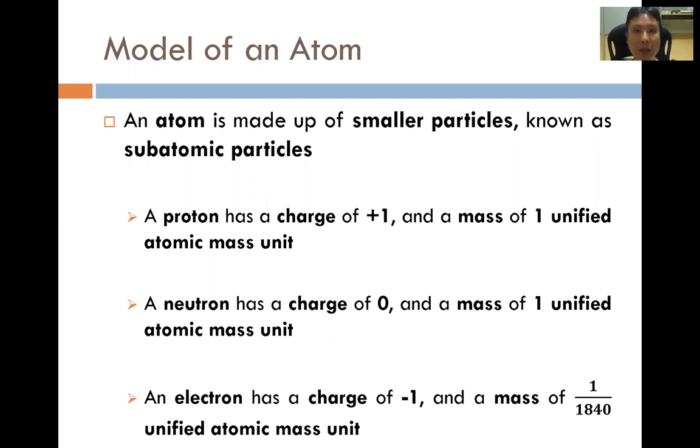Now, some of you may be interested if the proton, neutron, and electron can be subdivided into smaller particles. And to that, the answer is the proton can be divided into smaller particles called quarks. In fact, it is made out of two up quarks and one down quark. Whereas for the neutron, it can be divided into also three quarks, two down quarks and one up quark. However, as we know it today, the electron is the smallest subatomic particle that can exist and it cannot be further divided into smaller particles.